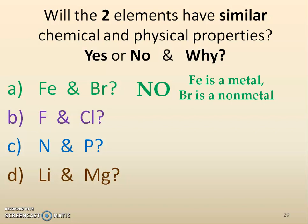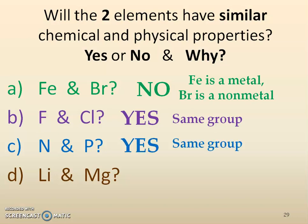Can you find fluorine and chlorine on your periodic table? Would they have similar properties? Absolutely, because they're in the same group — we're going to call them the halogens, which we'll see more of soon. How about nitrogen and phosphorus? They are in the same group, so they are definitely going to have similar chemical and physical properties.